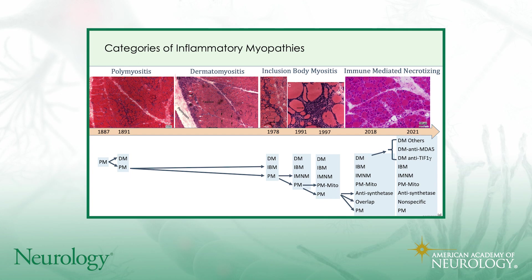Polymyositis quickly got split off into a category that included dermatomyositis because of the obvious skin rash that certain patients had, but there was almost a 90-year period during which there was no further understanding of these diseases until inclusion body myositis, or IBM, was noted in 1978 initially. What you can see has happened since then is there has been a continual splitting of the category of polymyositis into better defined subcategories, so that currently what we call polymyositis is actually a very small category.